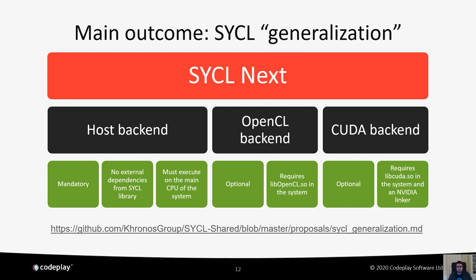One of the main outcomes of this project has been the SYCL generalization proposal. The idea is that the next version of SYCL will sit on top of different backends: a host backend that simply runs on the host as a simple pass application, an OpenCL backend, or a CUDA backend — and they will be optional, so you can have one or the other or both. This introduces the concept of a SYCL general application versus a SYCL interoperability application. There will be much more detail on the SYCL Next aspect once it is public.